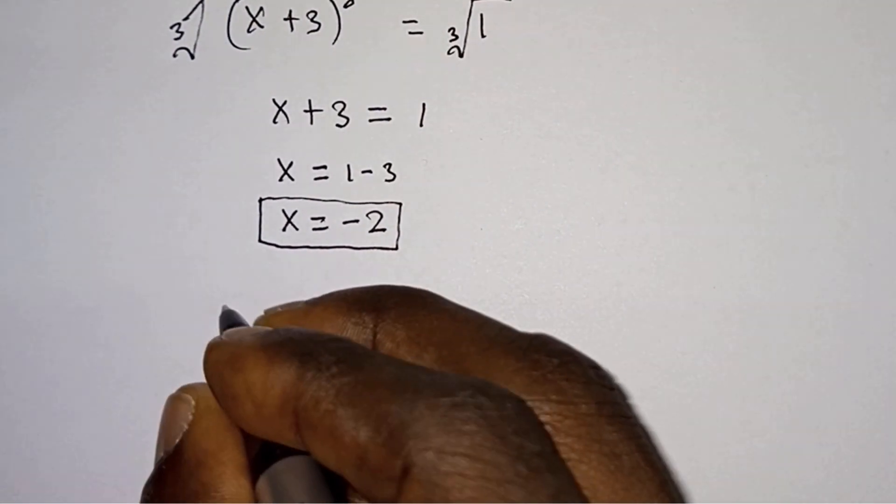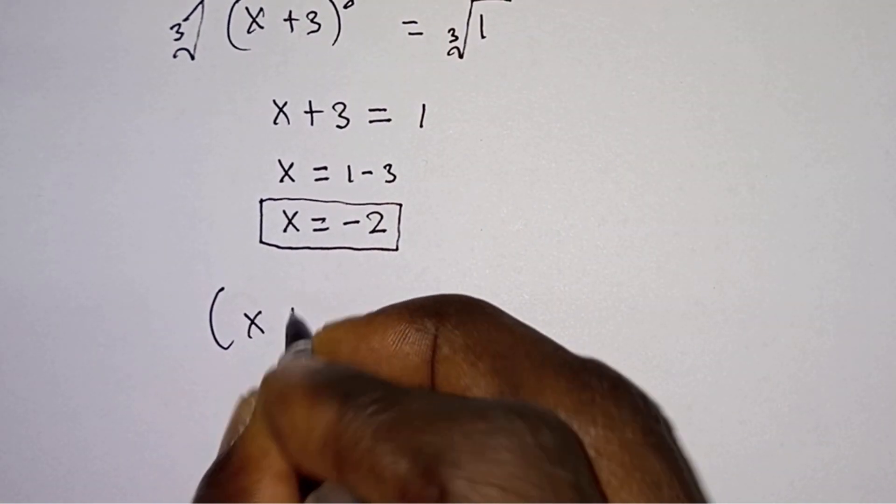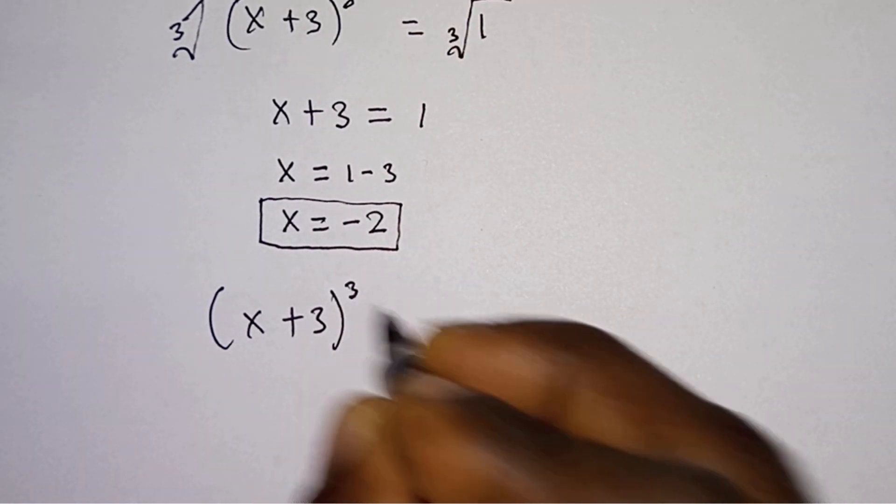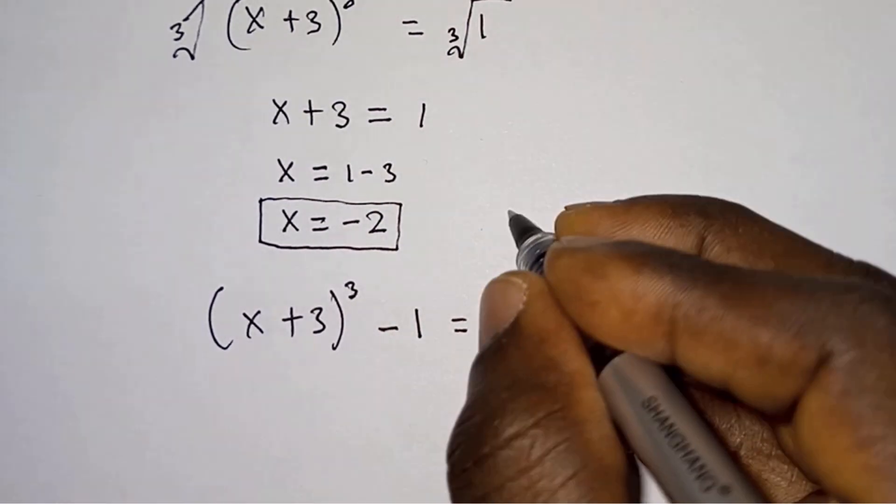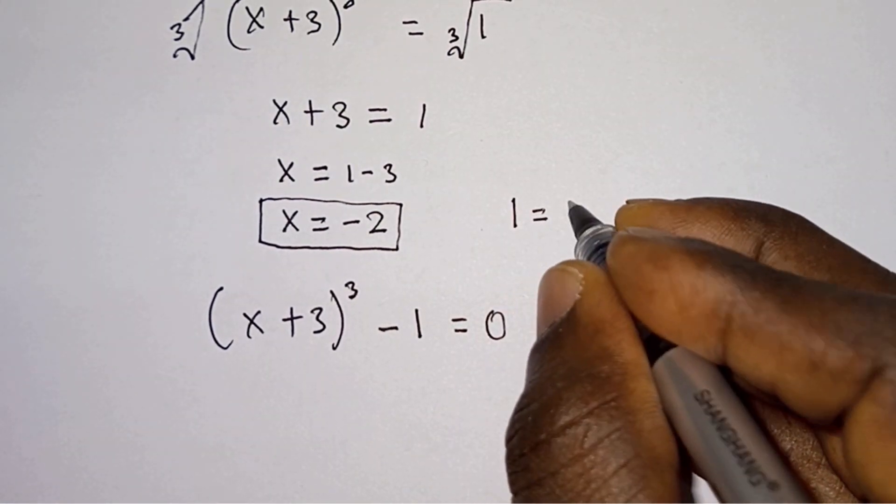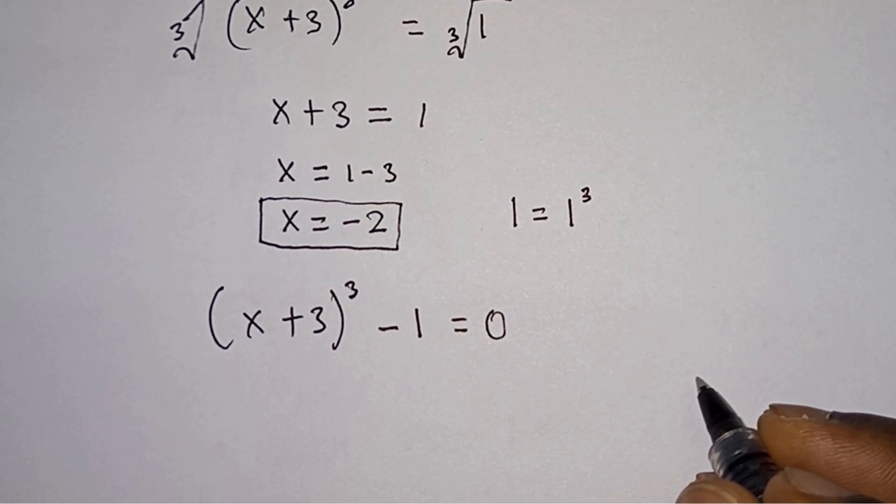So what do we do? First of all, let's equate everything to zero. So we're gonna have x plus 3 to the third power minus 1 equals zero.